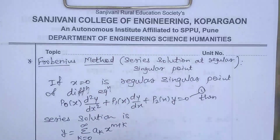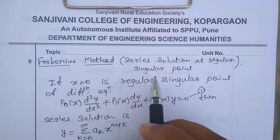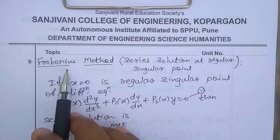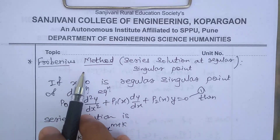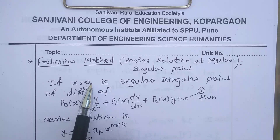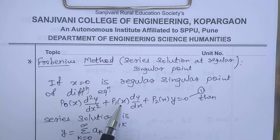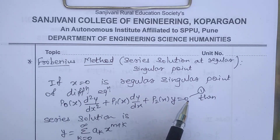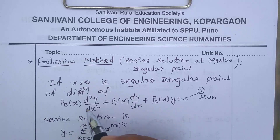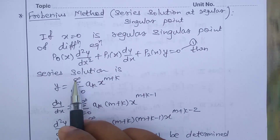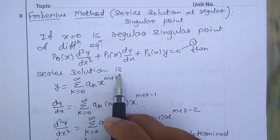To solve the series solution at a regular singular point, we use the Frobenius method. If x = 0 is a regular singular point of the differential equation p₀(x) d²y/dx² + p₁(x) dy/dx + p₂(x)·y = 0 (equation 1), then the series solution can be written as y = Σ(k=0 to ∞) aₖ x^(m+k).